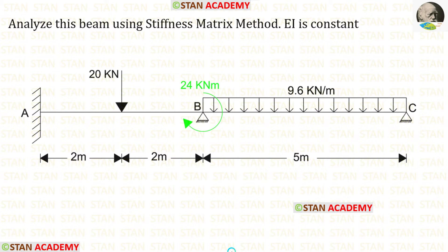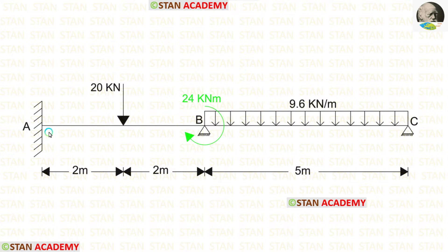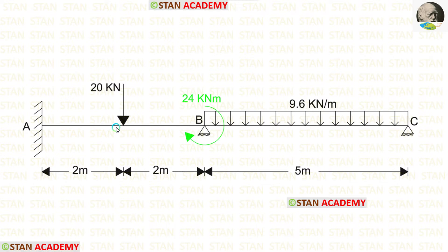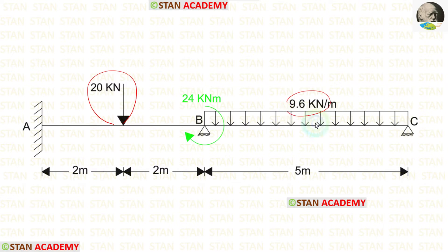Hello everyone. Today we are going to analyze this beam using the stiffness matrix method. Before analyzing, let us see the beam. In this beam there are two spans: span AB and span BC. In span AB there is a point load of 20 kN acting at the center. In span BC there is a uniformly distributed load of 9.6 kN per meter acting for the full span.